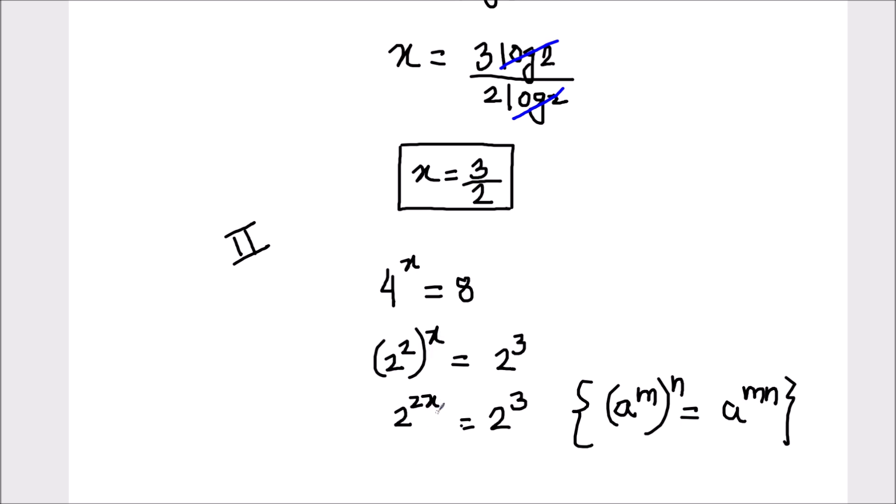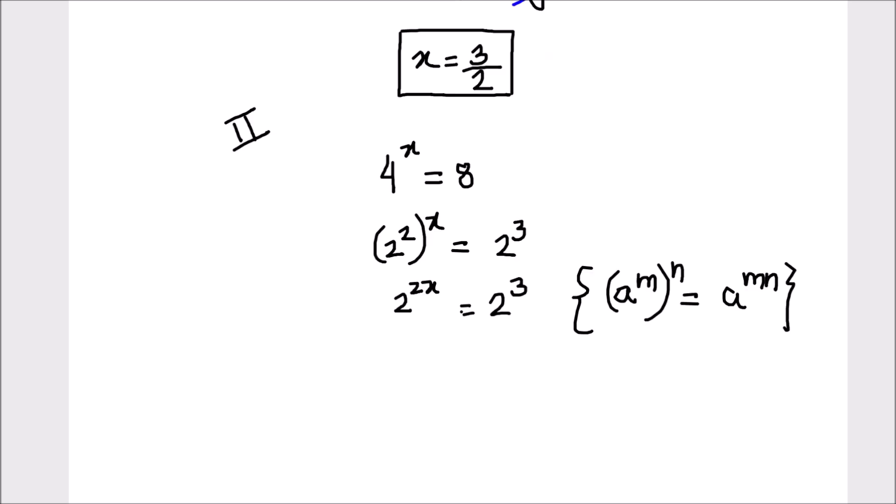Now we have 2 raised to power 2x equals 2 raised to power 3. According to another law of exponents, when the bases are same, as a raised to power m equals a raised to power n, then m will be equal to n. The powers or the indices will be same, so this implies that 2x equals 3.